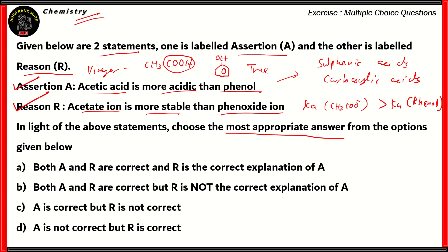We know both the assertion and the reason are true statements. But does the reason explain the assertion? Is acetic acid more acidic than phenol because the acetate ion is more stable than the phenoxide ion? If you look at it critically, it's not — because both the assertion and the reason are explained by a third underlying statement, and it does not imply that all acids which are more acidic than others would have more stable ions. For many kinds of organic acid, their acidity may be higher, but that does not mean they're more stable. So the right option is option B, where both statements are correct but R is not the correct explanation of A. Options A, C, and D are incorrect because C and D claim one of the statements is wrong, and option A incorrectly claims R explains A.